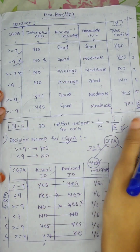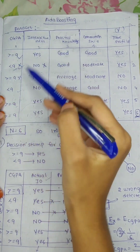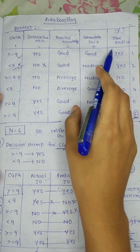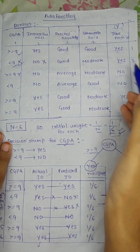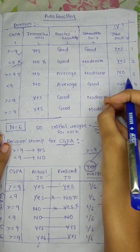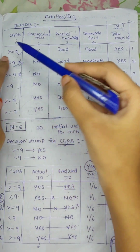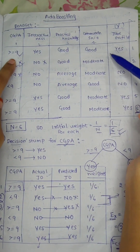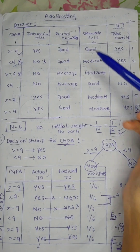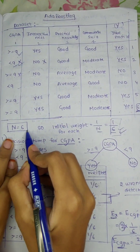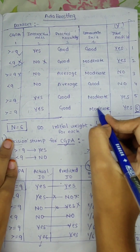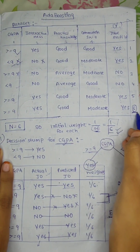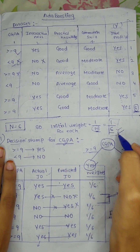In AdaBoosting, we will be given a dataset table with different features as inputs and outputs to predict. This is the data we will be working with. We have to initialize and update weights, and for different features like CGPA, predict whether the output should be yes or no. There are 6 observations in this dataset.